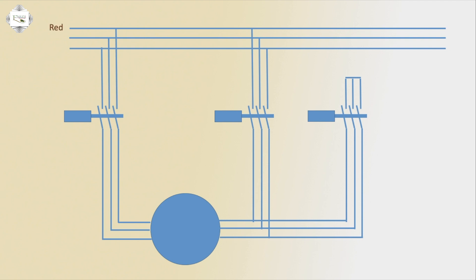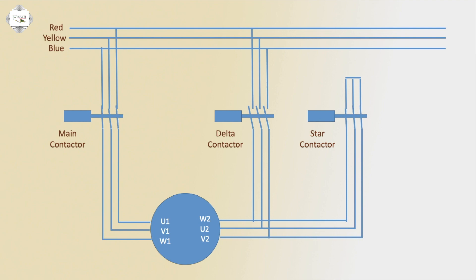In the diagram: red phase, yellow phase, and blue phase connect via the main conductor, delta conductor, and star conductor. The 3-phase motor has six terminals — U1, V1, W1, W2, U2, V2. After running the PLC program, the main conductor and star conductor connect, then after 10 seconds the delta connection activates.